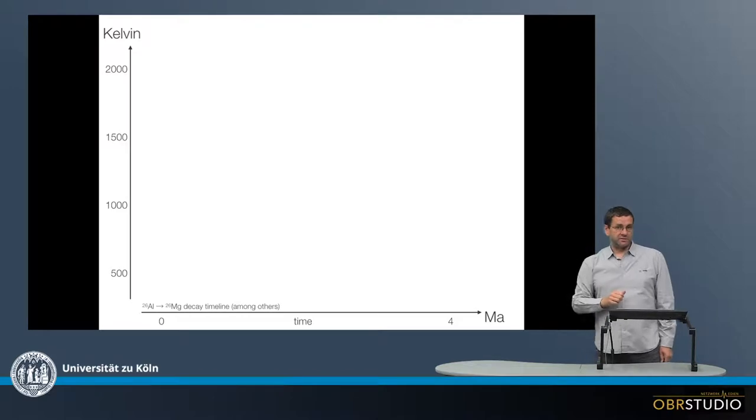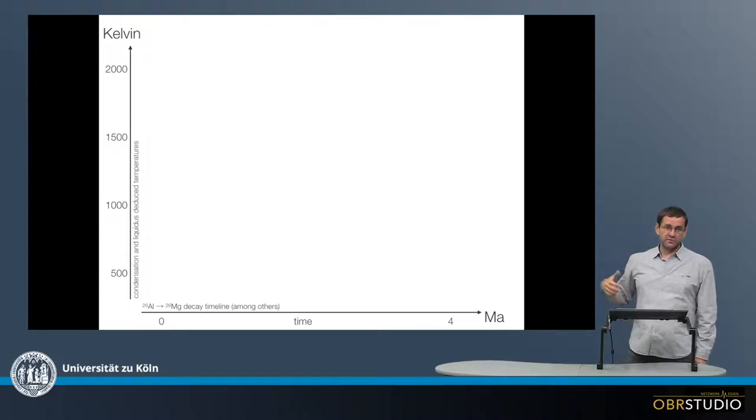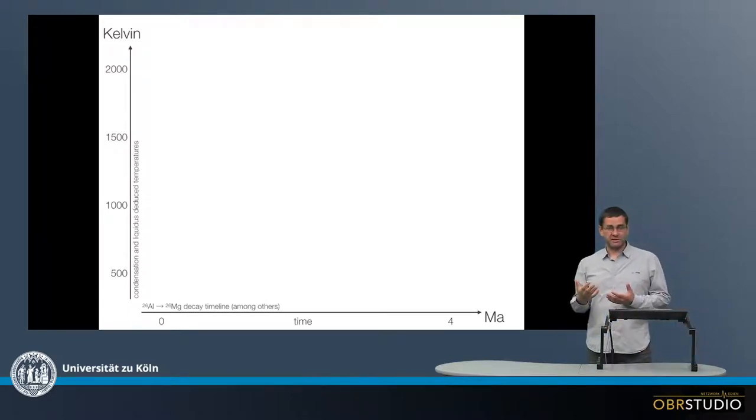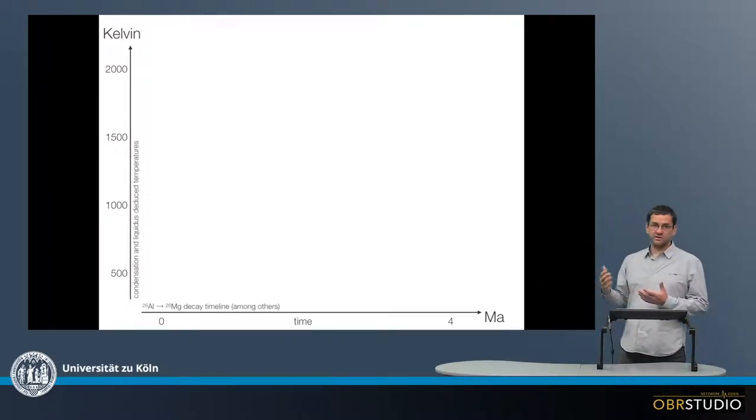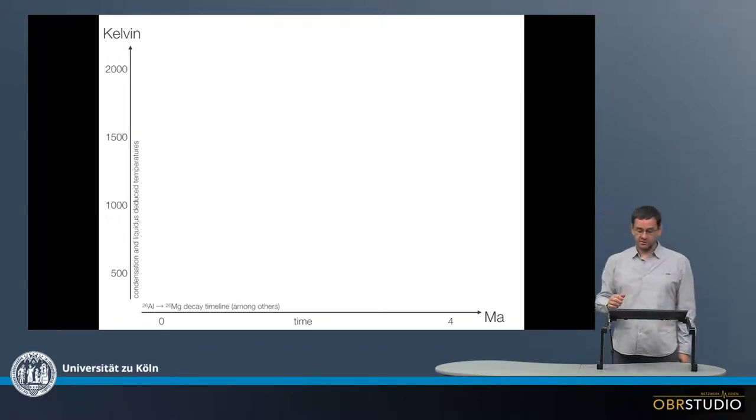On the y-axis is a temperature scale. Again, this is more qualitative between 0 and 2000 Kelvin. And we know temperatures from condensation considerations, liquidus temperatures of chondrules and so on.